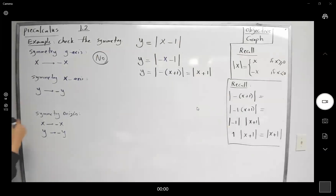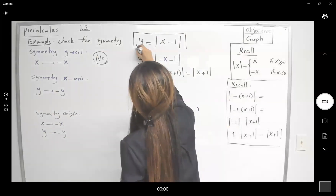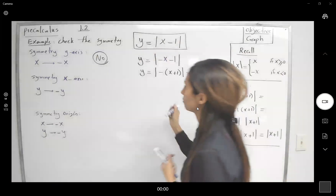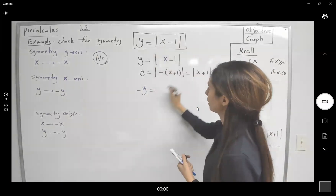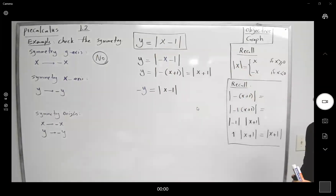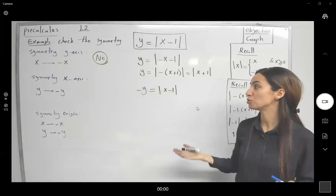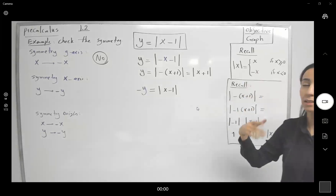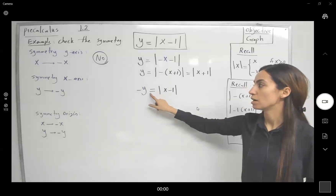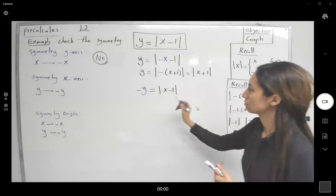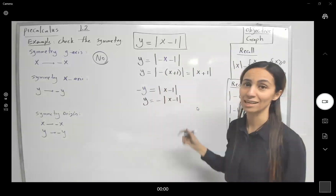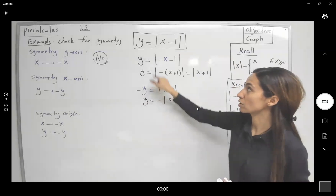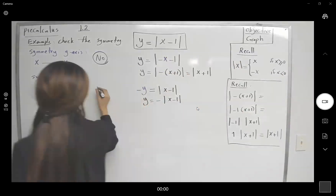What about symmetry with respect to the x-axis? Wherever I see y, I replace it by −y: I get −y = |x − 1|. Multiplying both sides by −1: y = −|x − 1|. Comparing with the original y = |x − 1|: the original has a positive absolute value, but the new result has a negative sign in front. They are not the same, so there is no symmetry with respect to the x-axis.